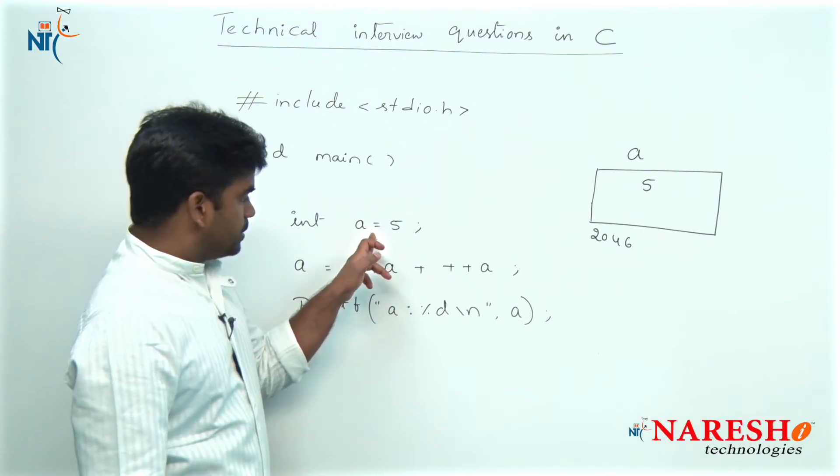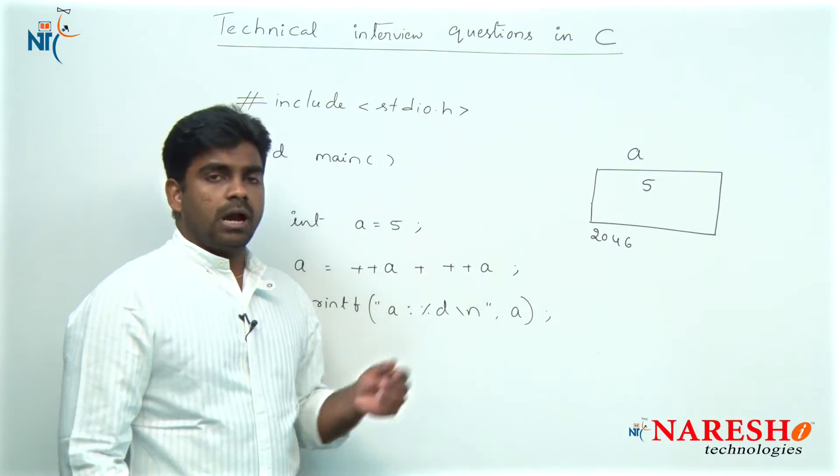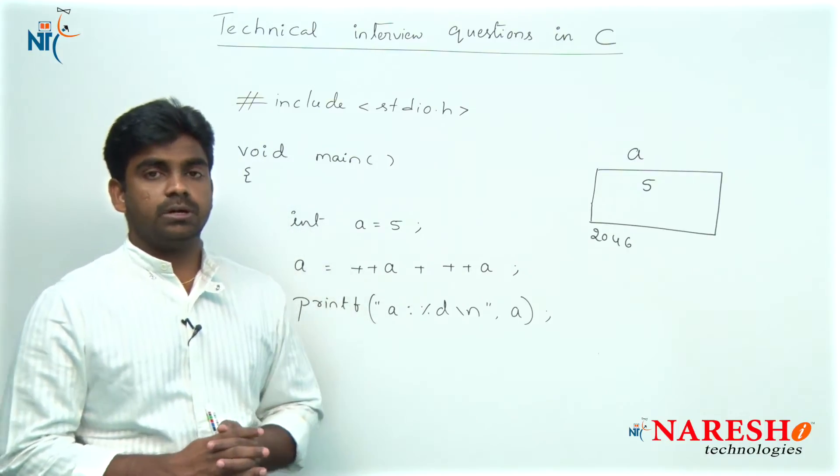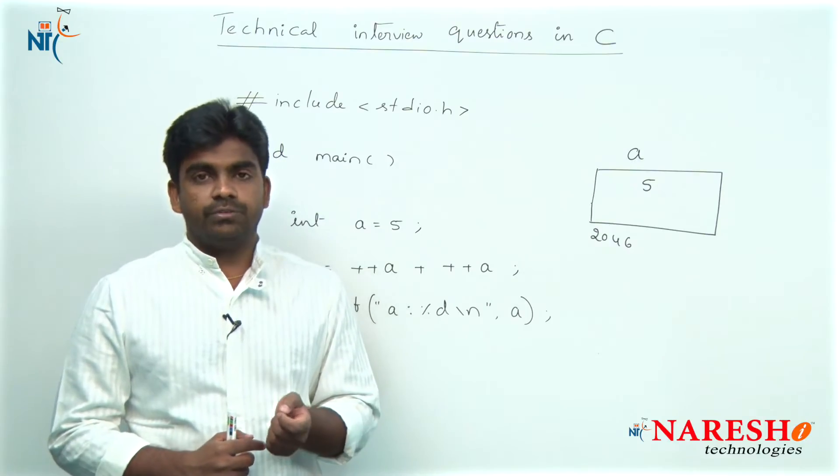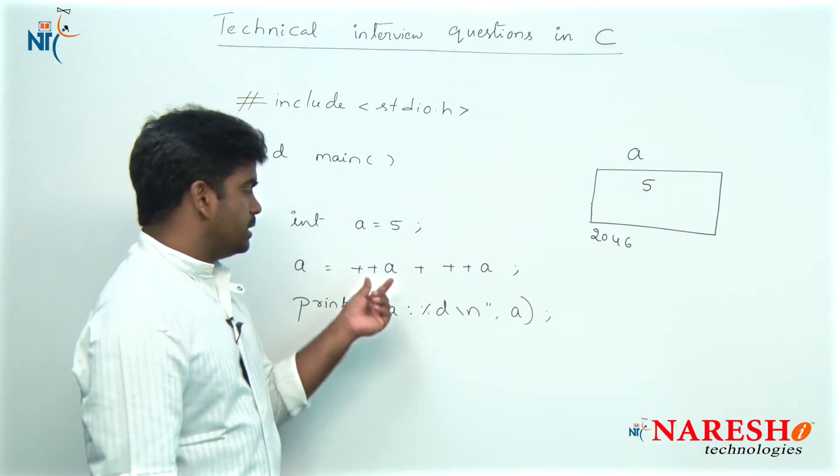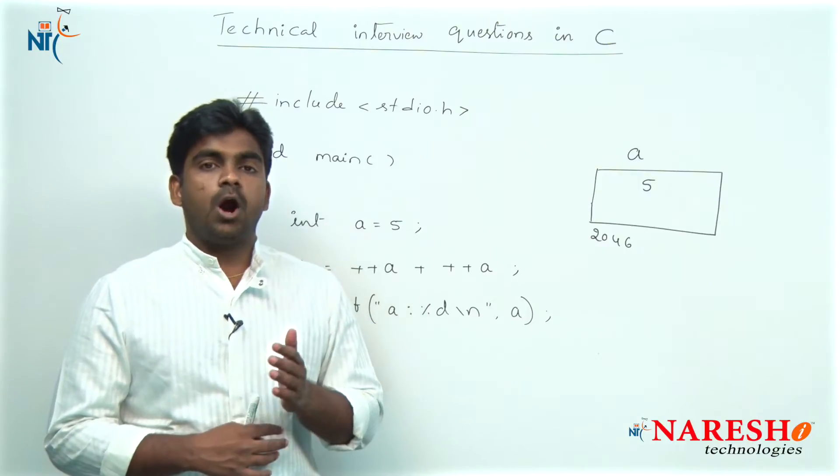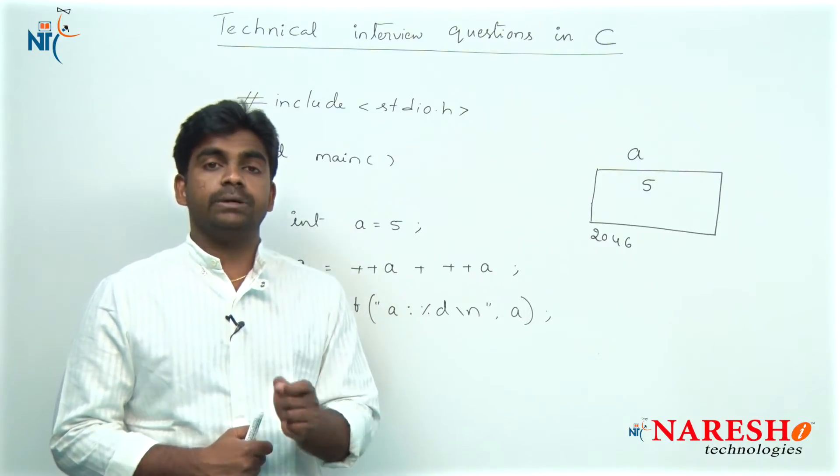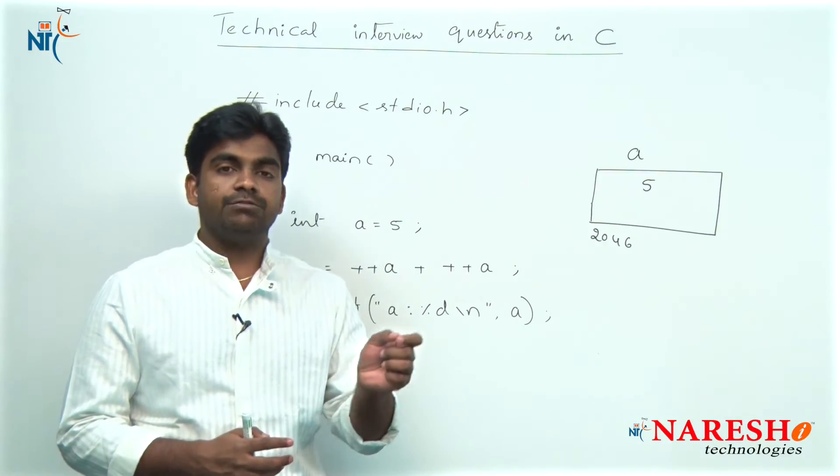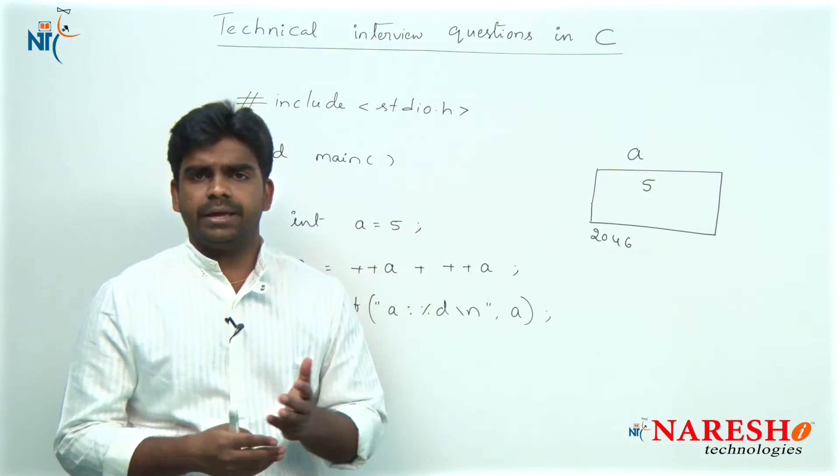Whenever the control comes to that next instruction, how that pre-increment operators and post increment operators execute means pre-increment means what: first increase the value of a variable and then substitute in the expression. First in this expression, how many pre-increments are there and how many pre-decrements are there, first you should increase and you should decrease all, and then only the final values you should substitute in the equation, in the expression.